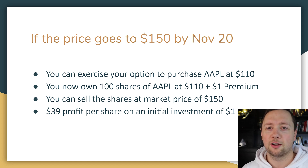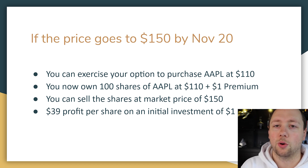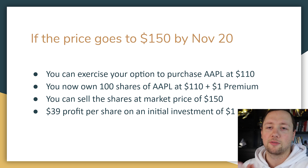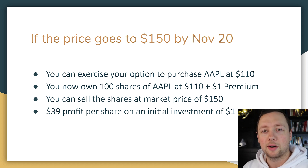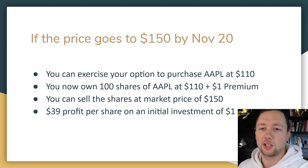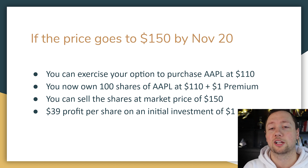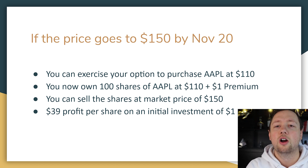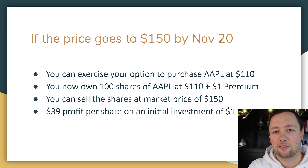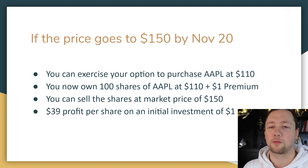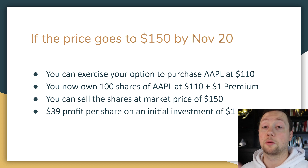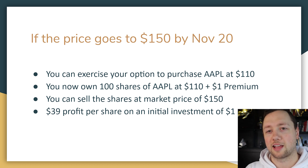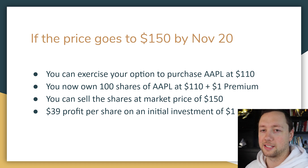The cool thing here is that your initial investment was only $1 per share. Yes, you needed funds available to buy and then sell the shares, but that money was never actually at risk. The only money ever at risk was your initial $1 per share, or $100 investment. However, that has now generated you a profit of $39 per share. That's why the risk-to-return ratio on options is much different than on stocks, and that is why some people trade options instead.